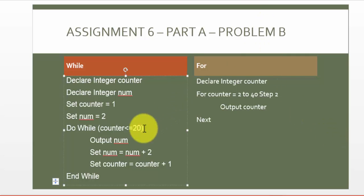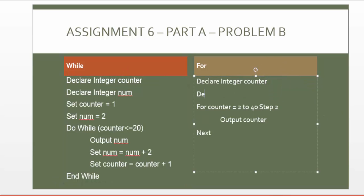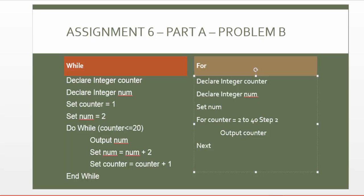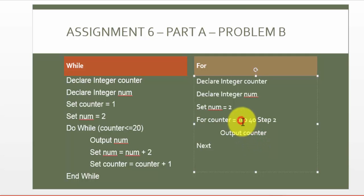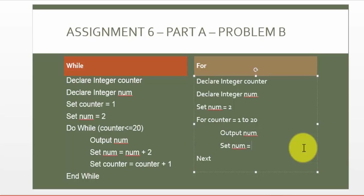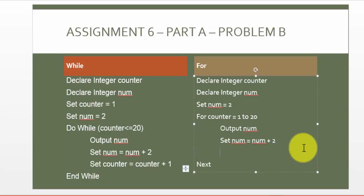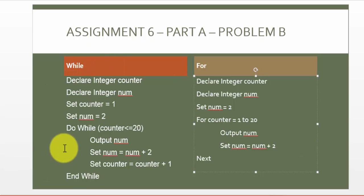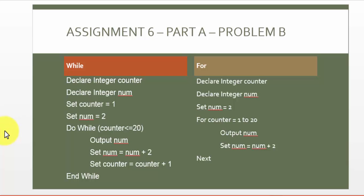Now let's do the same approach with the for loop. We declare two sets of variables and initialize number to 2. We run the counter from 1 through 20. Every time it runs, we display the value of number — not counter. We increment number by 2, because we have to display every even number. The value of counter does not need to be incremented here, unlike the while loop, because the for loop automatically adds 1. So this is the alternate for loop logic. Either of the two solutions are acceptable.